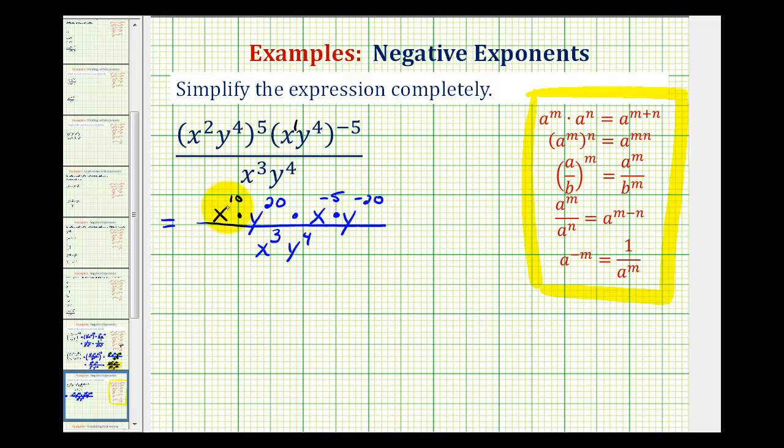So now we can multiply x to the tenth and x to the negative fifth, as well as y to the twentieth and y to the negative twentieth. When we perform this multiplication, since the bases are the same, we'll be adding the exponents. So we'll have x to the power of ten plus negative five is five. And y to the power of twenty plus negative twenty would be zero. Denominator stays the same.